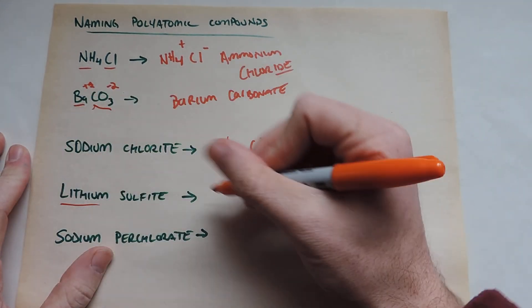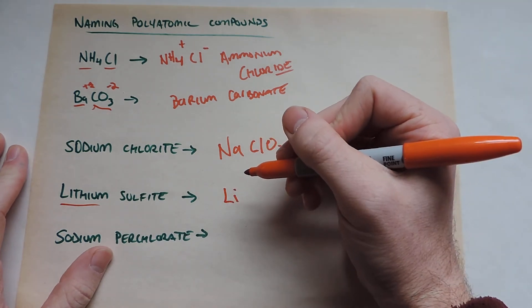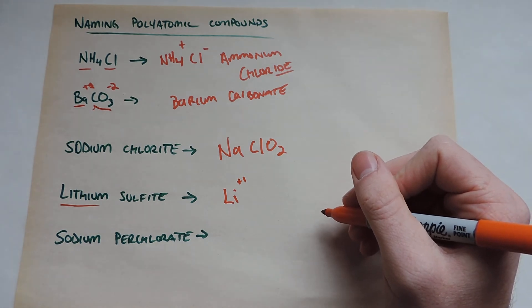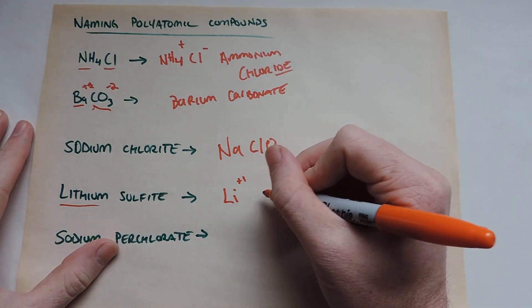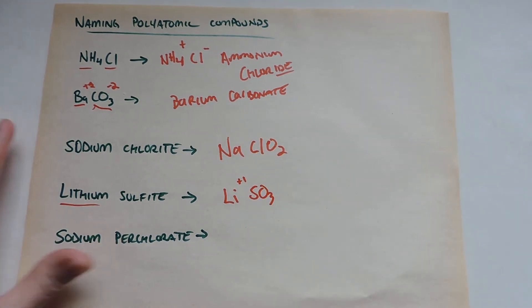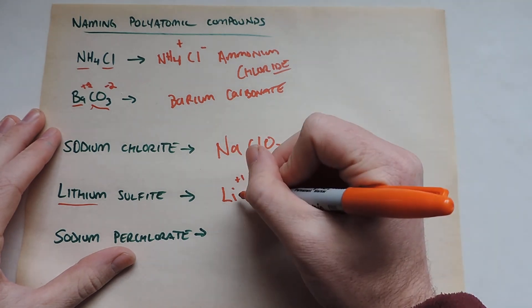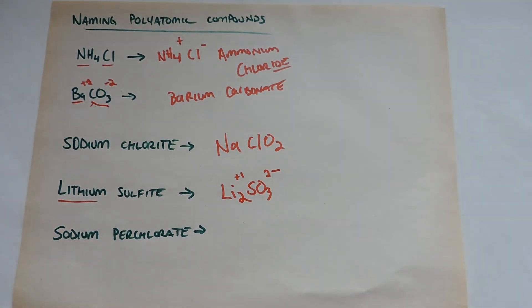And then this is lithium. We know that. Lithium is alkali, meaning it is plus one. And sulfite is just SO3. You just got to memorize it. And it's two minus. So you're going to want lithium two sulfite.